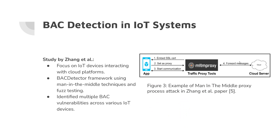BAC detection in IoT systems: this paper covered a man-in-the-middle proxy approach where someone would intercept incoming signals to the system and ride that pathway to see what was going on — essentially hacking the transportation layer rather than the user directly. They proposed a detection framework utilizing a man-in-the-middle technique and fuzz testing to uncover vulnerabilities in communication between IoT devices and cloud services. The study introduced a semi-automated system called BAC Detector, which successfully identified multiple BAC vulnerabilities across various IoT devices, highlighting unique challenges such as encrypted communication and the need for dynamic and static reverse analysis techniques.